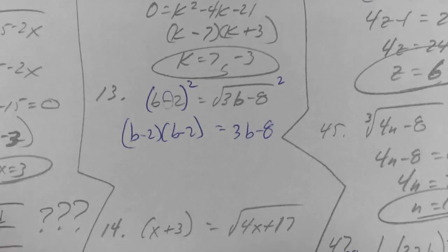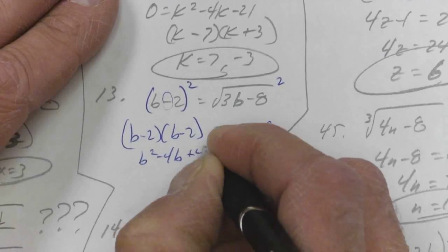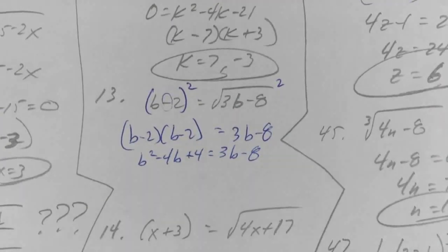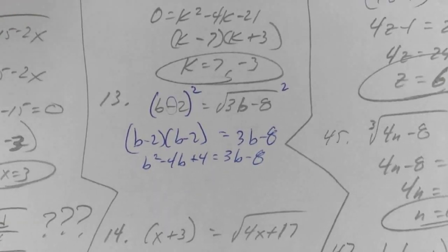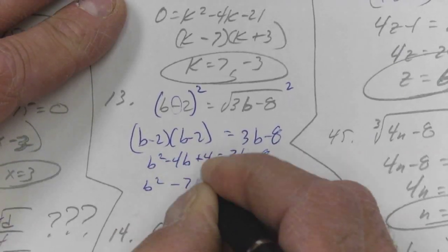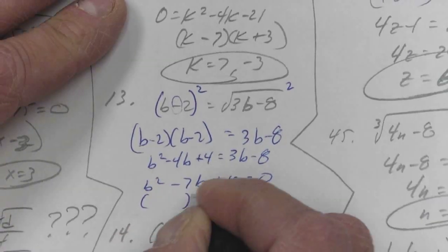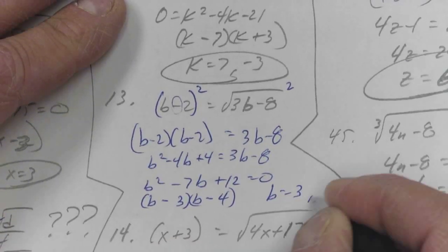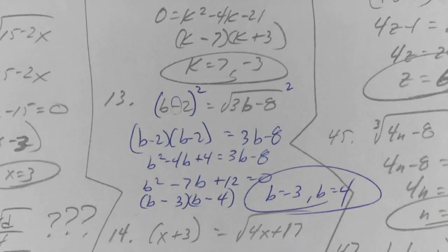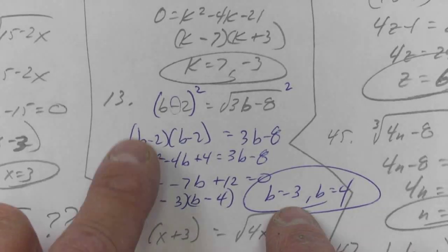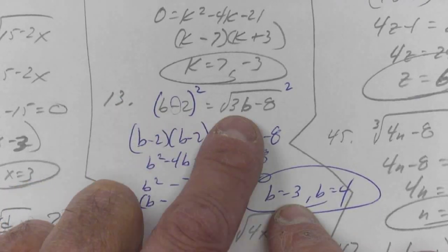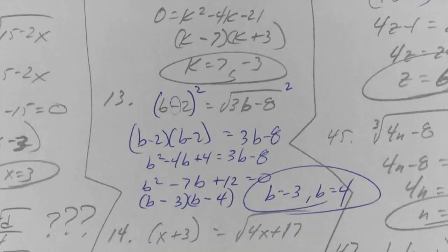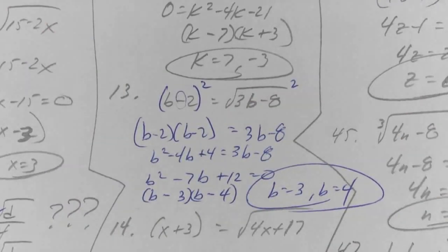So I get b squared minus 4b plus 4 equals 3b minus 8. And at this point in time you should be able to put your critical thinking brain away and just go into autopilot. So I'm just going to do this in my head real quick. 3 minus 2 is 1, 3 times 3 minus 8 is 1, square root of 1 is 1, so that's good. 2, 4, yeah, so both work. Sometimes we get an extraneous solution, sometimes we don't.